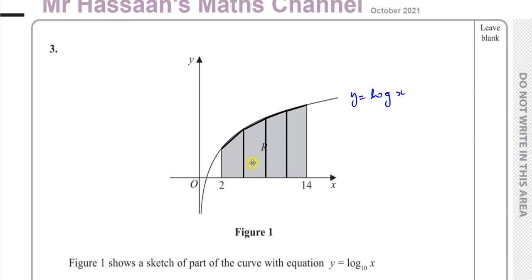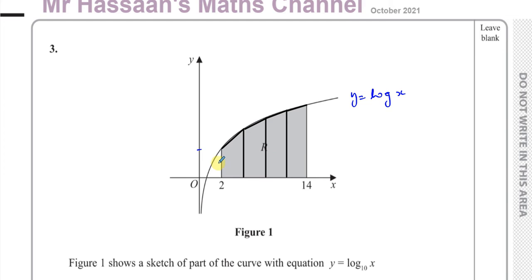If I find the area of each of these trapeziums and add them together, I get the approximate area under this curve between those limits. Let's say the height of this line — which is when you put x equals 2 into the equation — is y0.